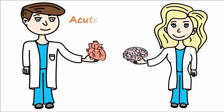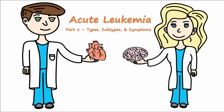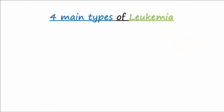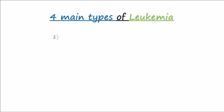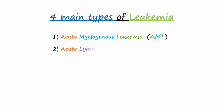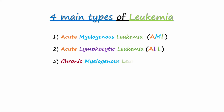Let's talk about acute leukemia. In this video we discuss two major types of acute leukemia as well as their subtypes and describe their symptoms. There are four main types of leukemia: acute myelogenous leukemia or AML, acute lymphocytic leukemia or ALL, chronic myelogenous leukemia or CML, and chronic lymphocytic leukemia or CLL.